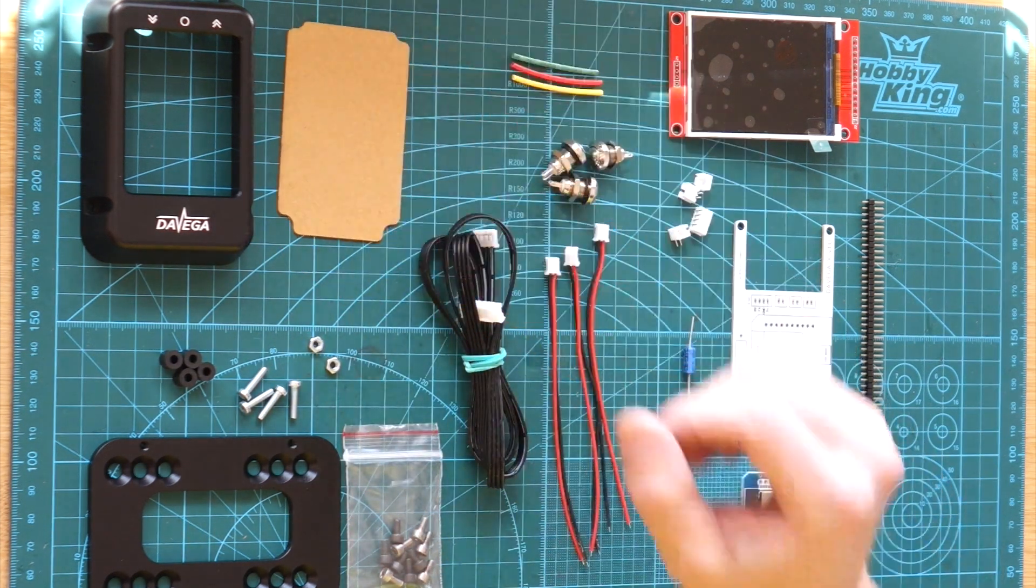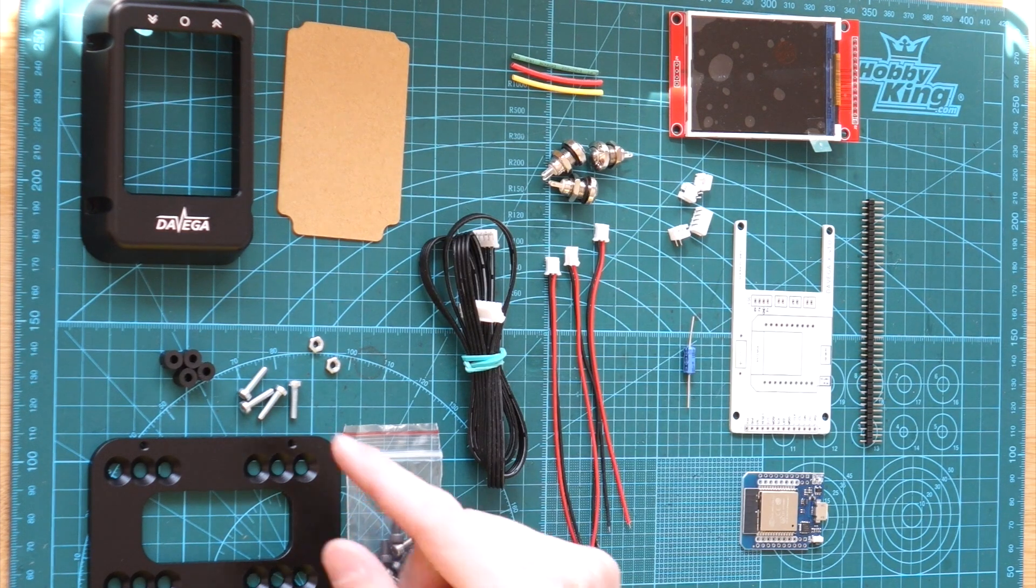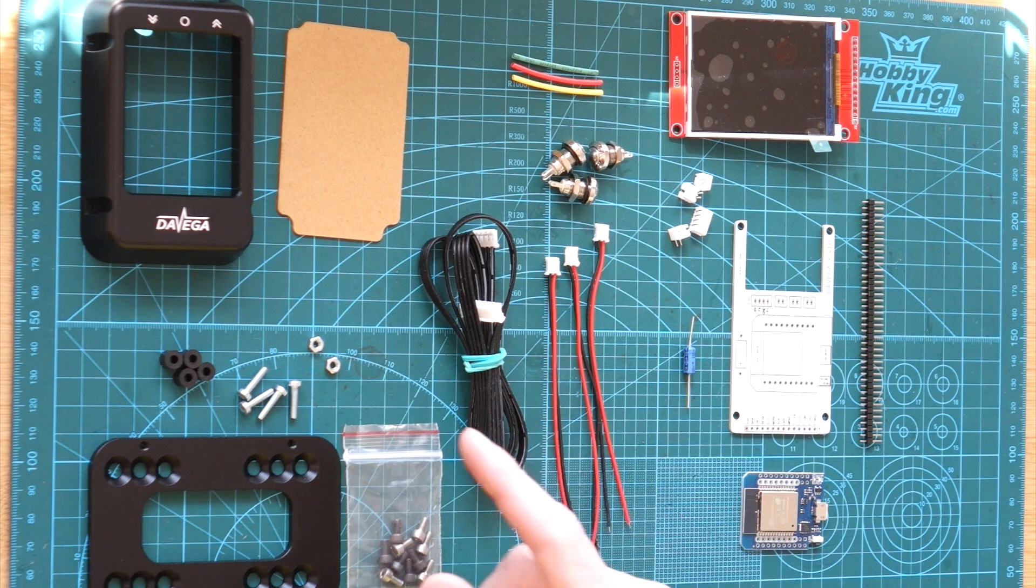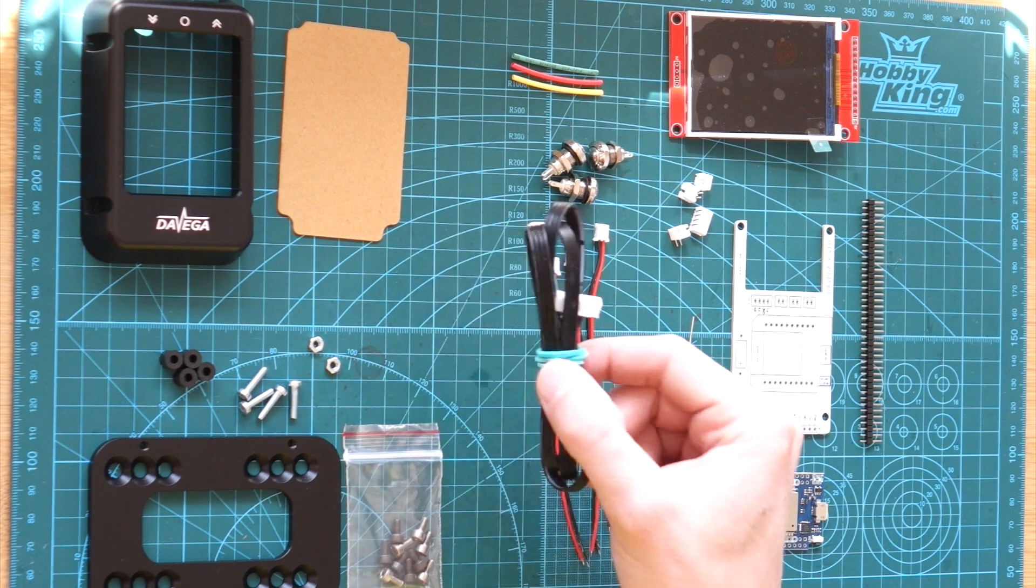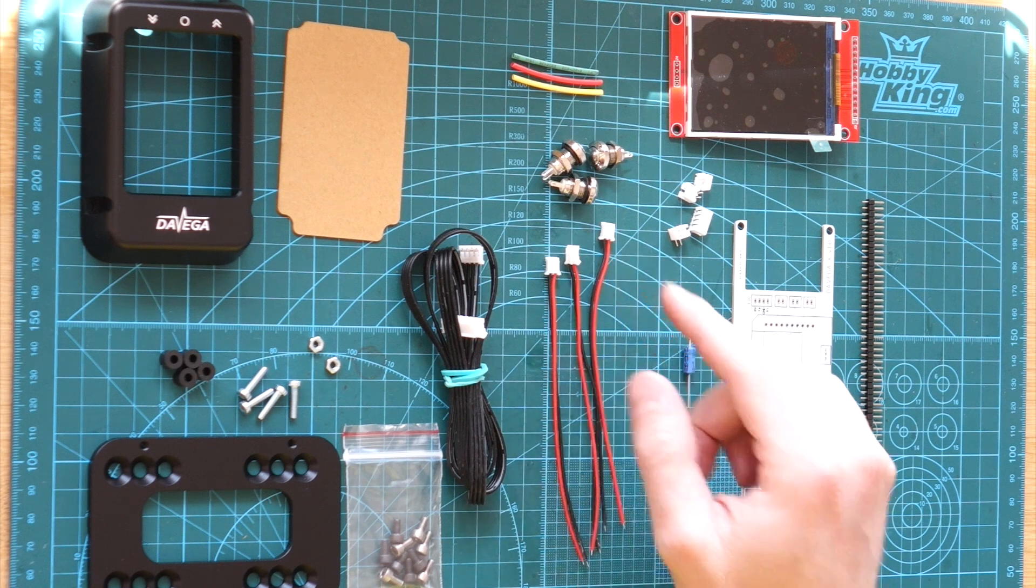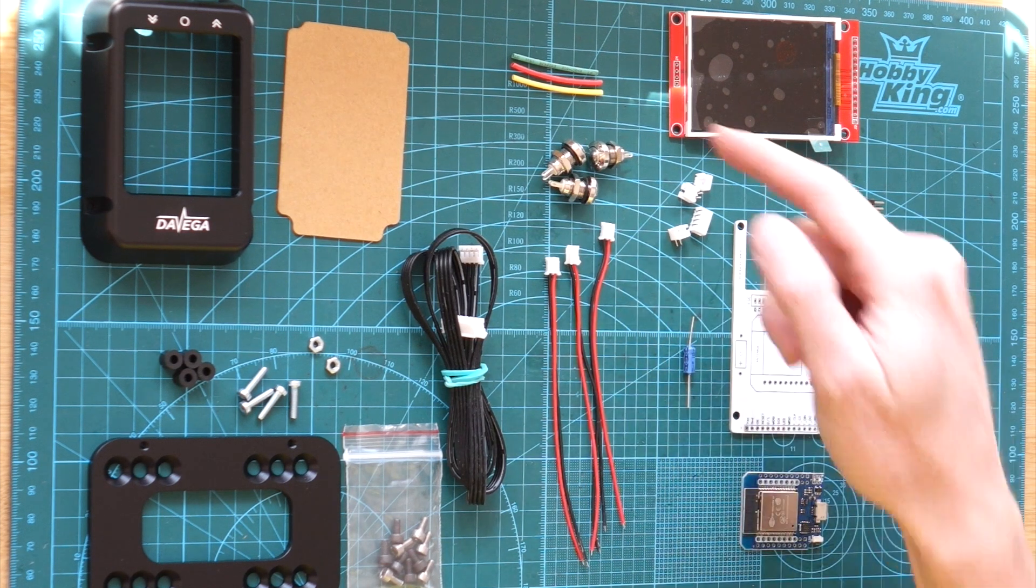the protected glass for the housing. Some bolts and spacers, these are for mounting the electronics into the housing. Cable, three buttons and wires and connectors for the buttons. Some heat shrink.